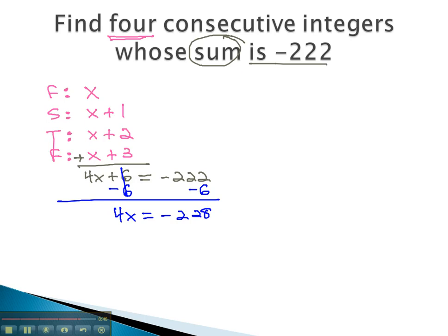We get x alone by dividing both sides by 4. As we do, x is equal to negative 57. This is our first number, negative 57.